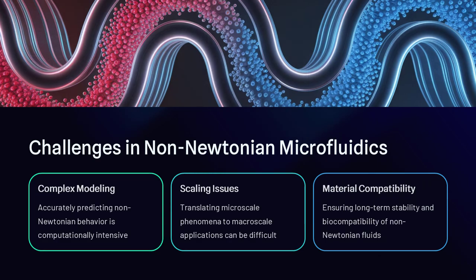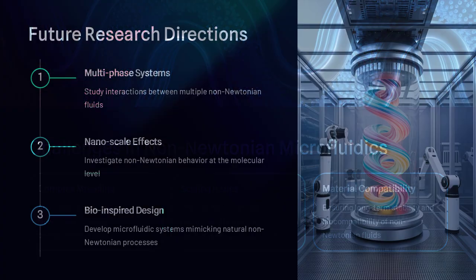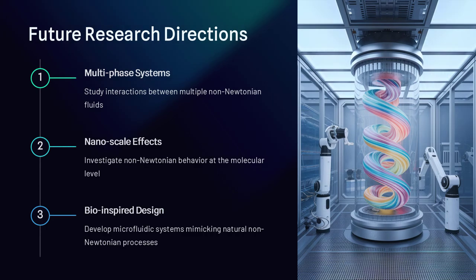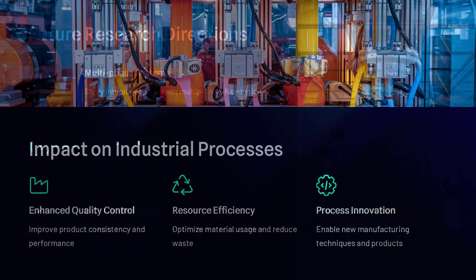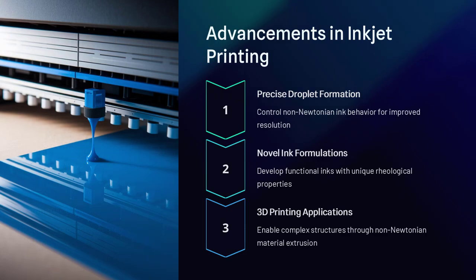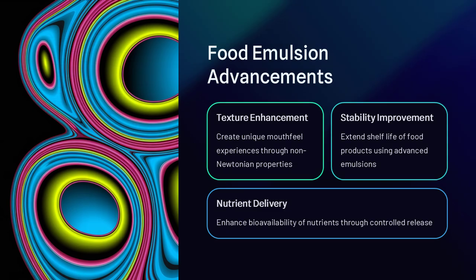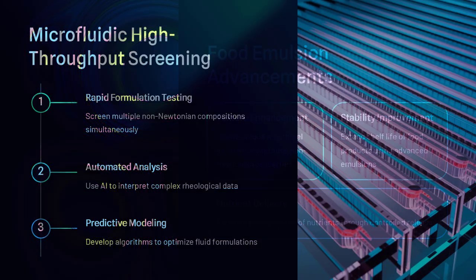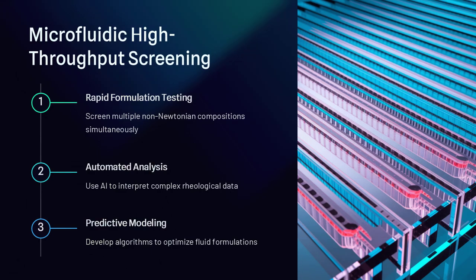In contrast, shear thickening fluids may offer improved control over emulsions with tunable stability, beneficial for food science, pharmaceuticals, and cosmetics. Biological fluids such as blood, mucus, and protein solutions naturally exhibit non-Newtonian properties. In microfluidics, this presents both challenges and opportunities for disease diagnostics, lab-on-a-chip devices, and personalized medicine.